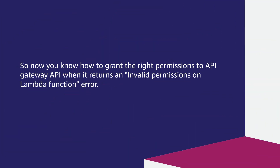So now you know how to grant the right permissions to an API Gateway API when it returns an invalid permissions on Lambda function error.